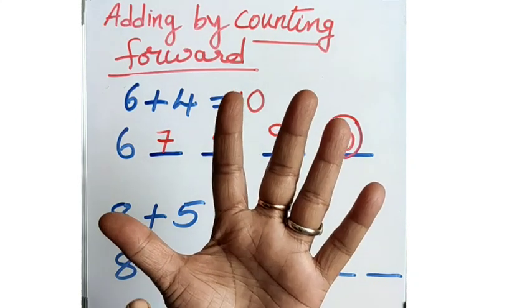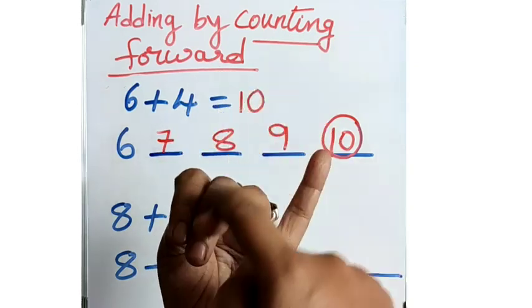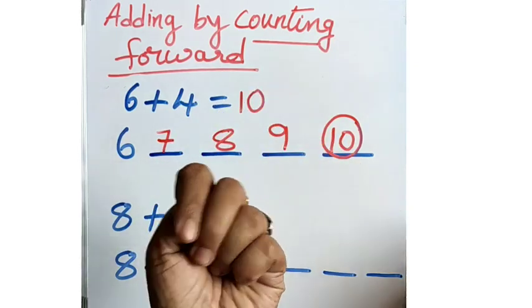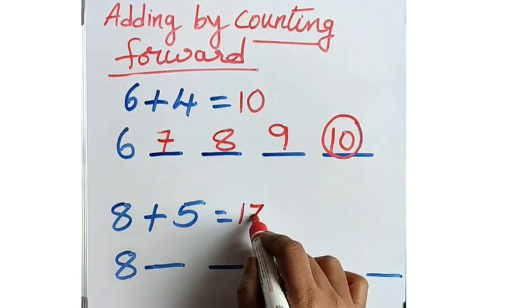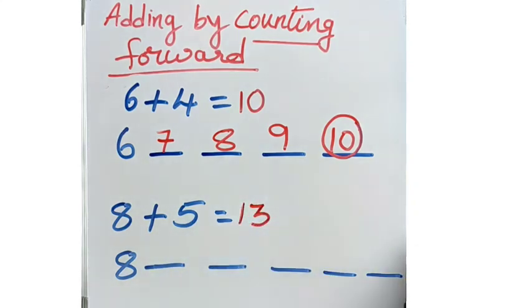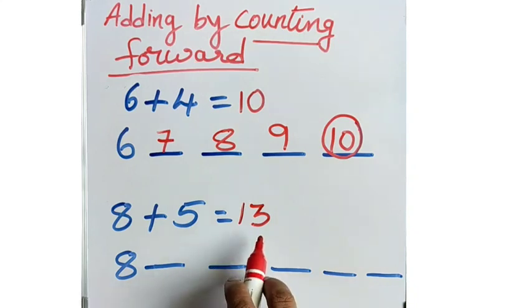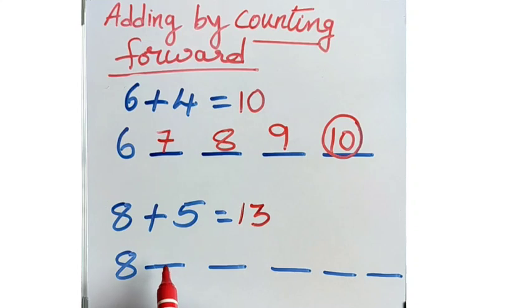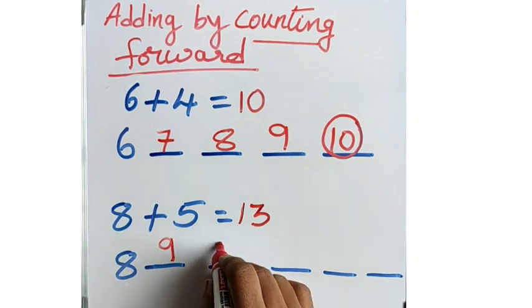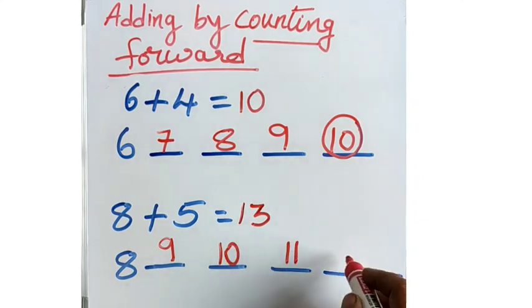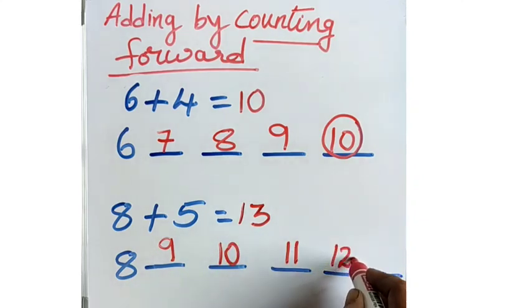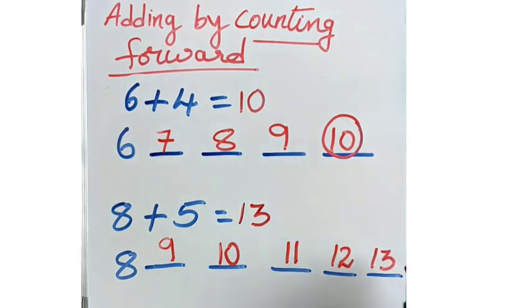8 after — 9, 10, 11, 12, 13. So 13 is your answer. Let us verify: 8 after — 9, 10, 11, 12, 13. Here also we got 13. Is it easy?